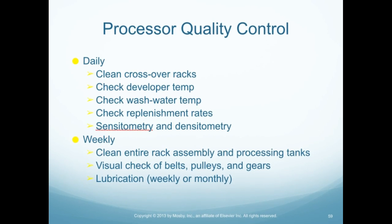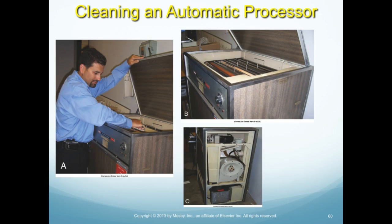Processing quality control: daily tasks include cleaning the crossover racks, checking the developer temp, checking the water temp, checking the replenishment rates, and performing sensitometry and densitometry on processed films. Weekly tasks include cleaning the entire rack assembly and processing tanks, visual check of the belts, pulleys, and gears, and lubrication weekly or monthly. Again, this is something that's done by a third party.